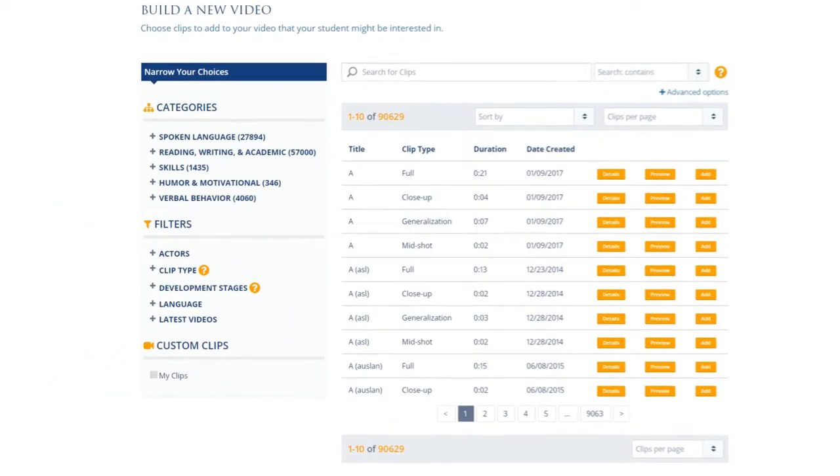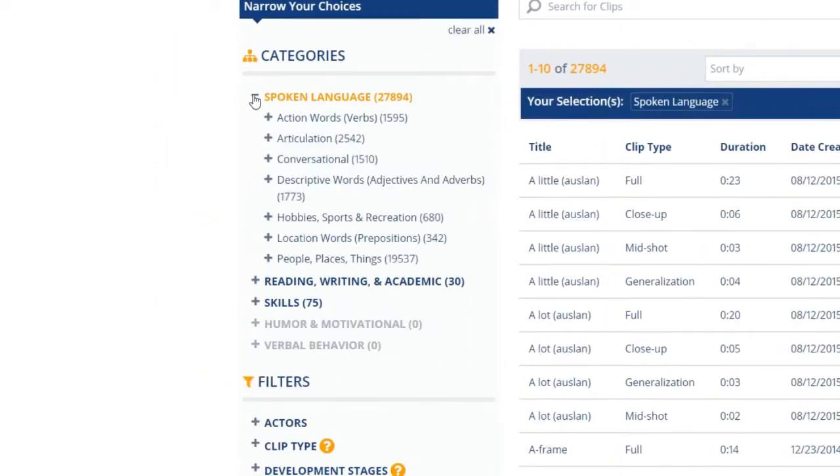The categories are broken into five sections. Spoken Language is where you will find clips that help with vocabulary, sentence building and conversational skills.